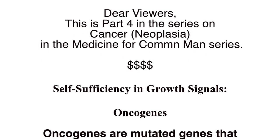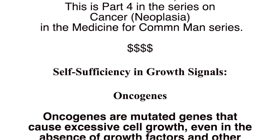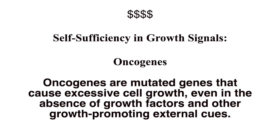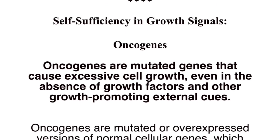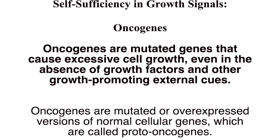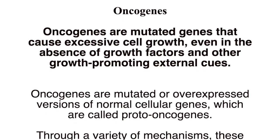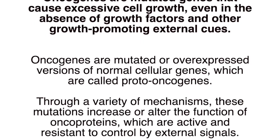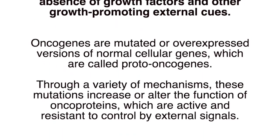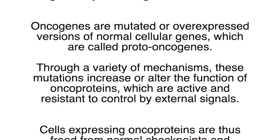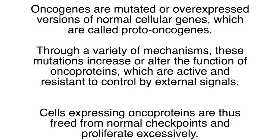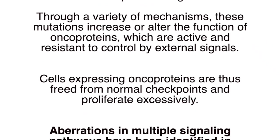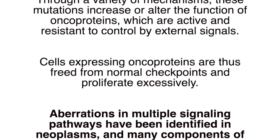Oncogenes are mutated genes that cause excessive cell growth even in the absence of growth factors and other growth-promoting external cues. Oncogenes are mutated or overexpressed versions of normal cellular genes which are called proto-oncogenes. Through a variety of mechanisms, these mutations increase or alter the function of oncoproteins, which are active and resistant to control by external signals. Cells expressing oncoproteins are thus freed from normal checkpoints and proliferate excessively.